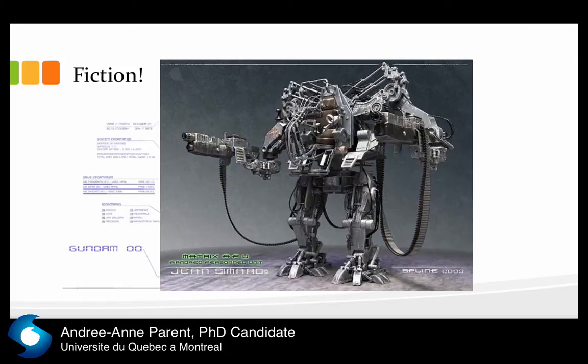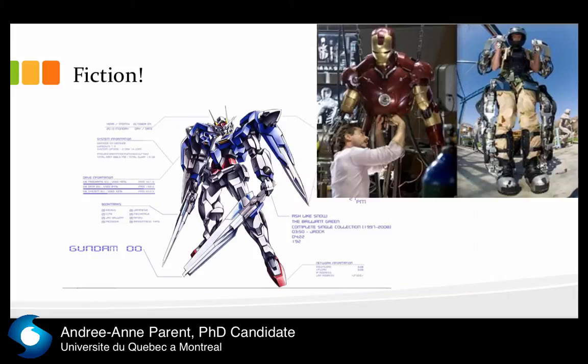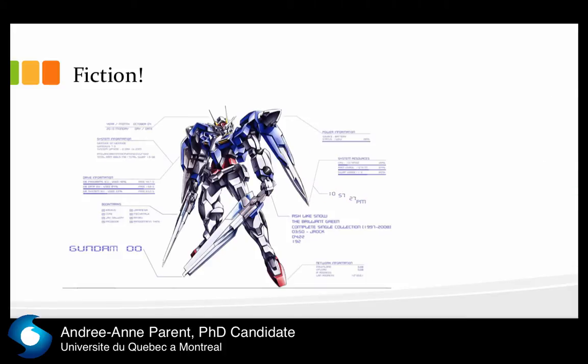You also have movies like Animatrix — the APU, if you've seen it — which is also an exoskeleton. And Ironman: Ironman has been a huge inspiration for NASA and other exoskeletons that exist today.